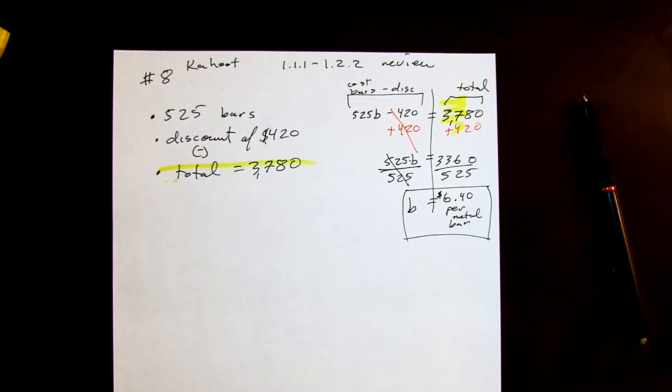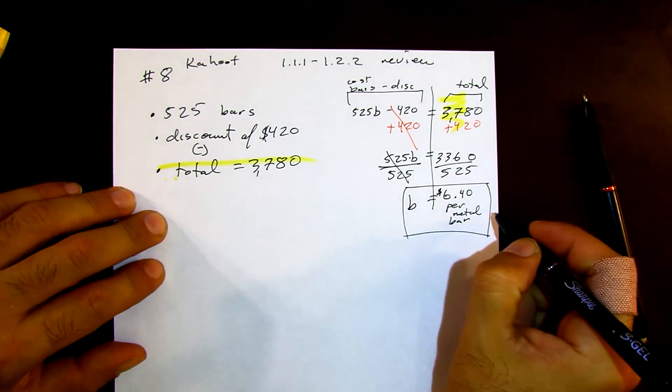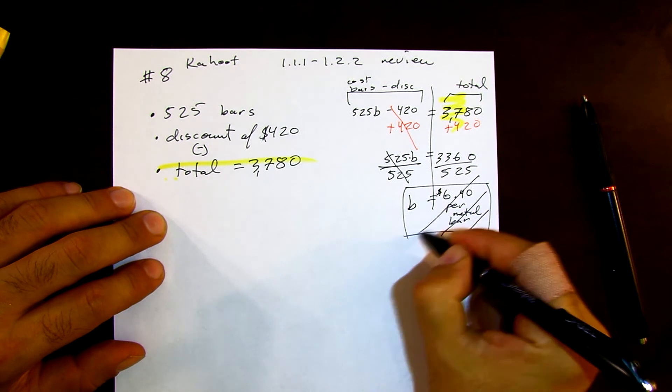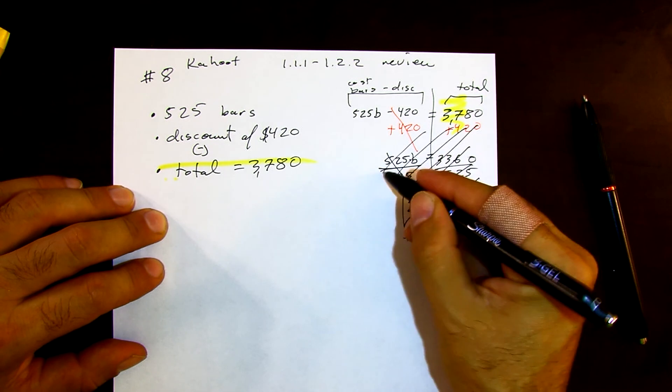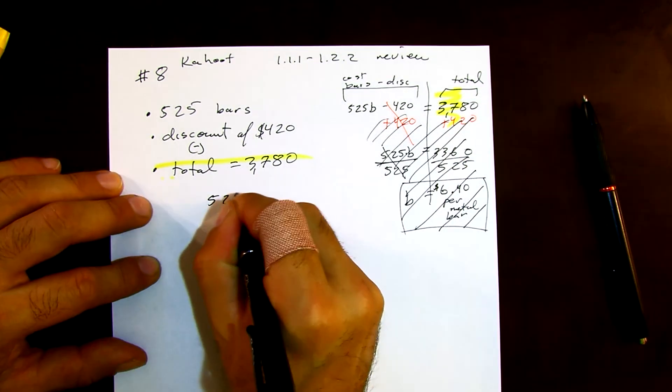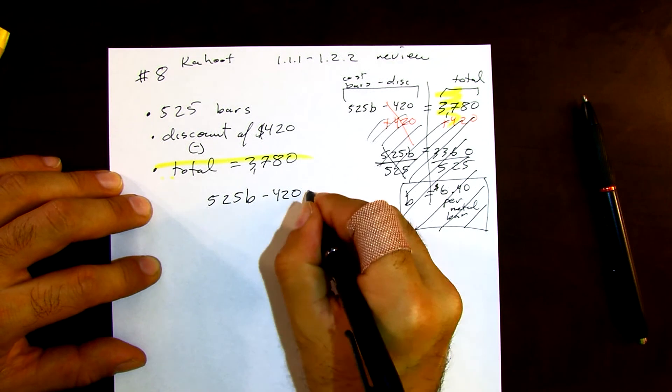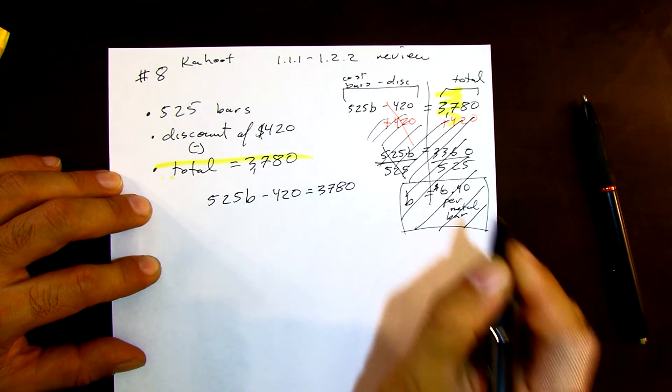So $3,780 plus $420 equals $4,200. Okay, because I subtracted instead of added. In class, Marco, you would get a starburst for correcting me. I did the mistake that everybody did. Let's rewrite it. Thank you, Marcos. And if you're frustrated with that, I don't get too frustrated when you all mess up, so keep that in mind.